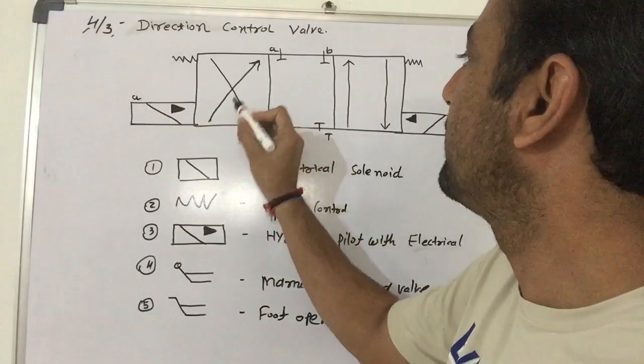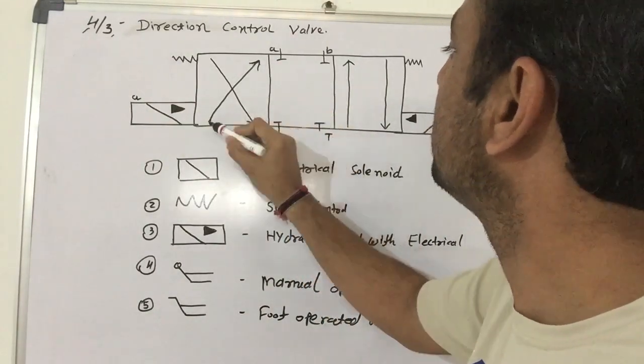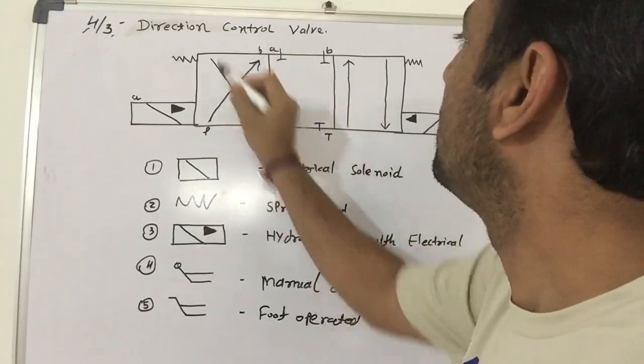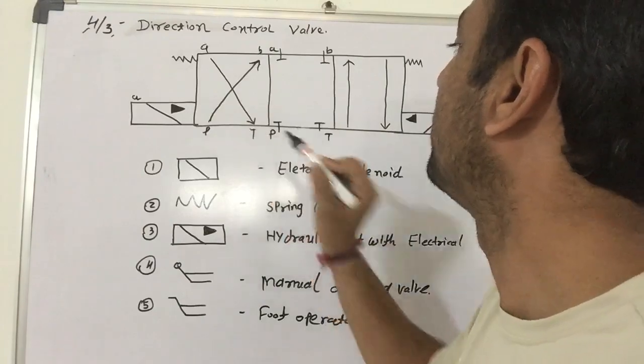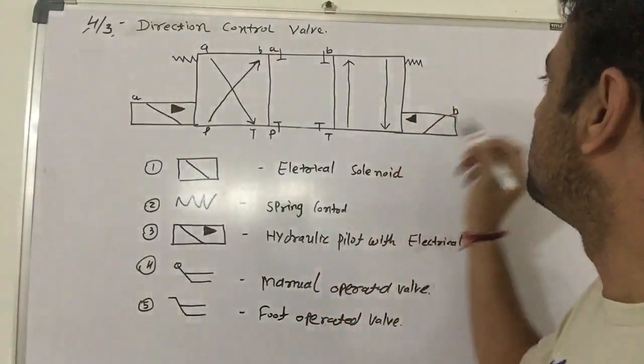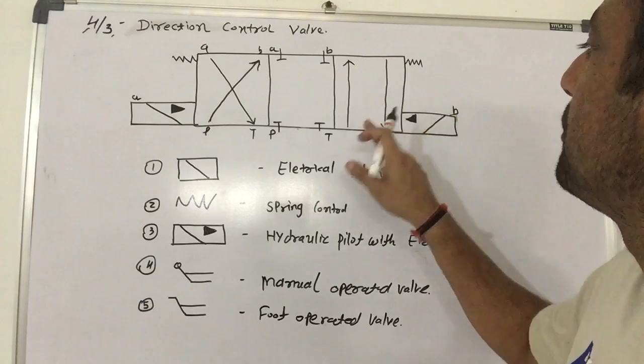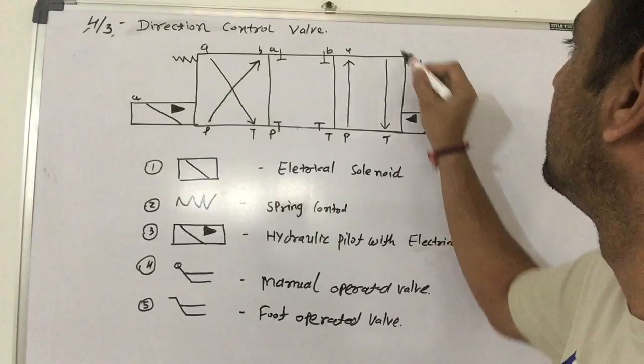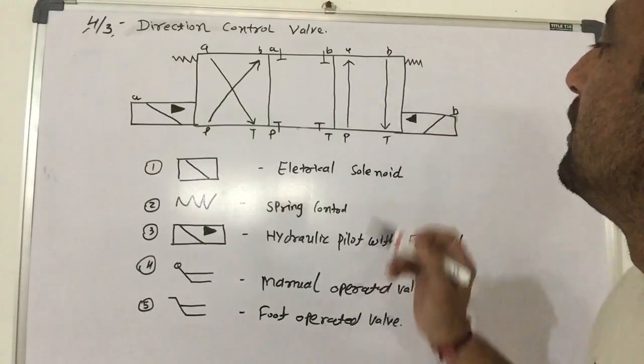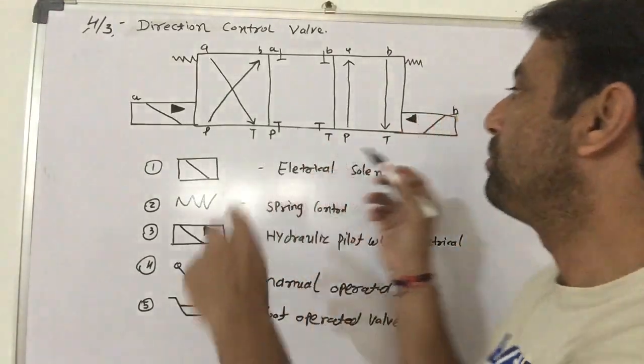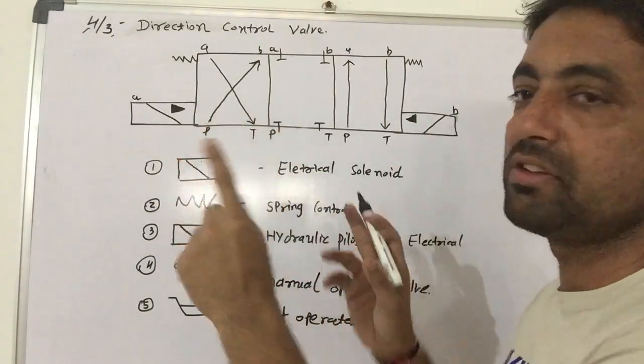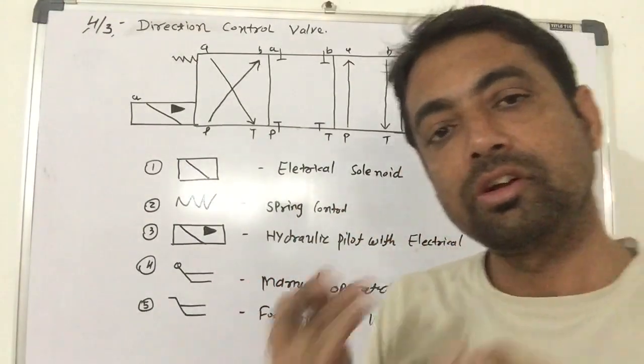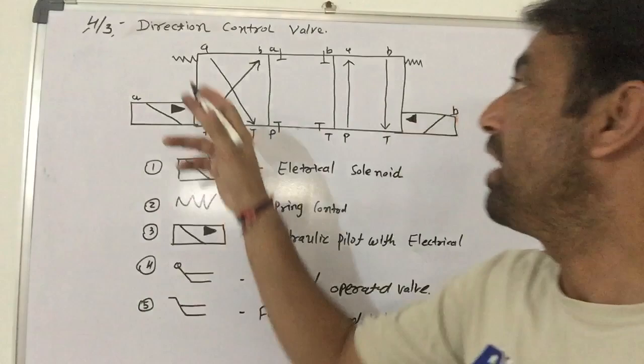If this symbol is given here, that means P line is connected to B and A line is connected to a tank. When we have the same position, A line is connected to B, and B line is connected to A. When we need the same sequence, we use oil and control the direction of oil. That's why it's called direction control.